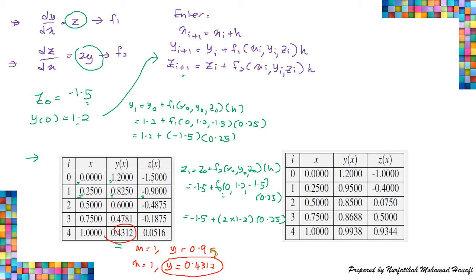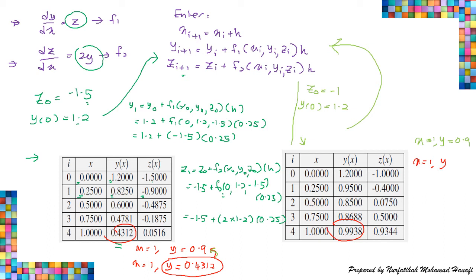For the second calculation, we start with the second initial guess where Z₀ = -1, with Y₀ = 1.2. Using the same Euler method, here is the complete table. Checking the value: when X = 1, our Y = 0.9938. The condition requires Y = 0.9, so the value from calculation is not equal to our required condition. We need to find a new value for Z₀ using extrapolation.